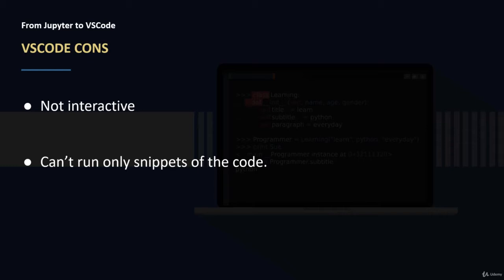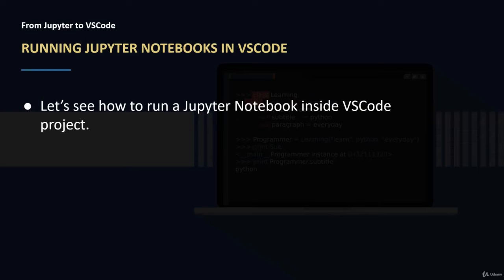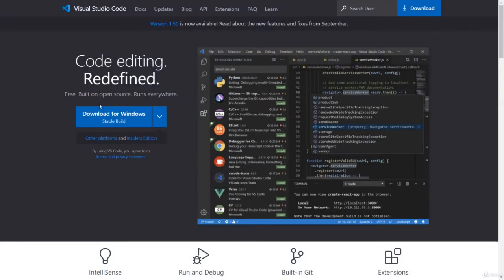If we have 100 lines of code we cannot run just 20 lines — we need to run the whole 100 lines and see the output. This is in contrast to Jupyter Notebook where we could run 10 lines by writing them in a code cell and running that cell by itself. So we have some cons for VS Code and some cons for Jupyter Notebook. Now let's see how we can run Jupyter Notebooks inside VS Code.